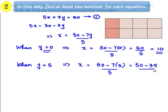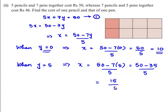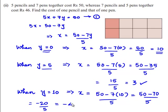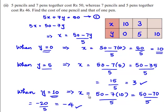When y equals 10, x equals (50 minus 70) divided by 5, which is minus 20 divided by 5, equal to minus 4. Let us tabulate these values: when y is 0, x is 10; when y is 5, x is 3; when y is 10, x is minus 4.